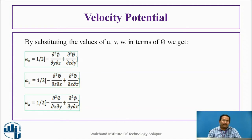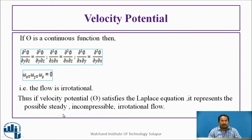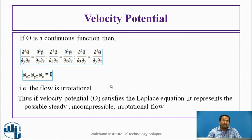After simplifying and substituting the values, you will find that when the rotational velocity in x, y, and z directions is equal to zero, this is called irrotational flow. Thus, if the velocity potential satisfies the Laplace equation, it represents a possible steady, incompressible, and irrotational flow.